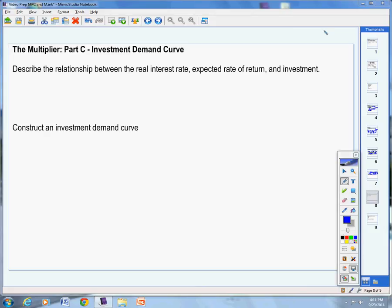Welcome back to Mr. Latham's AP Macroeconomics. We're going to wrap this up with Part C of the multiplier, which is the investment demand curve. This is relatively simple, but it'll be useful in a lot of what we do from here on out. First thing is describe the relationship between the real interest rate, expected rate of return, and investment.